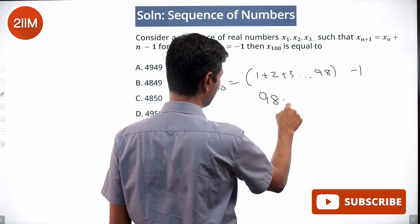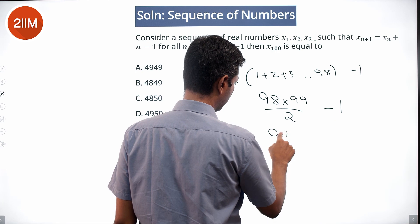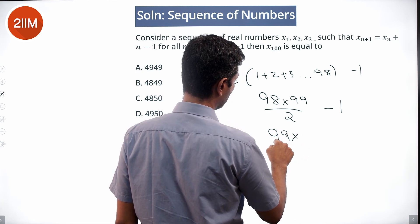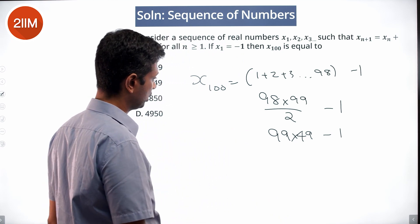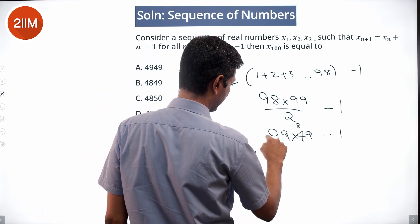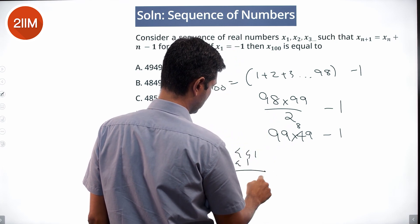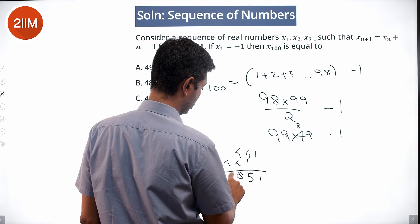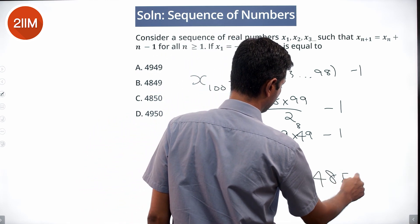This we know is 98 × 99 / 2 - 1, which is 99 × 49 - 1. Let's calculate: 9 nines are 81, 1 8, 9 fours are 36, 4 41, 4 41, 1 5, so 4851 - 1, which is 4850.